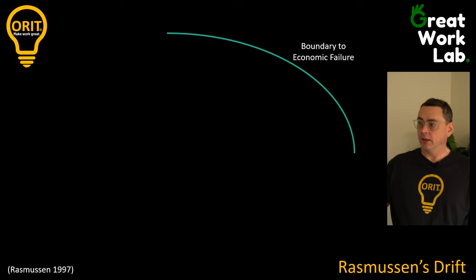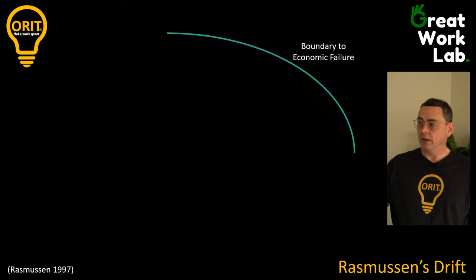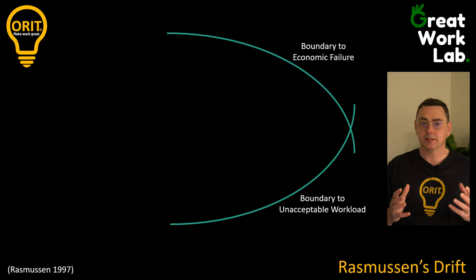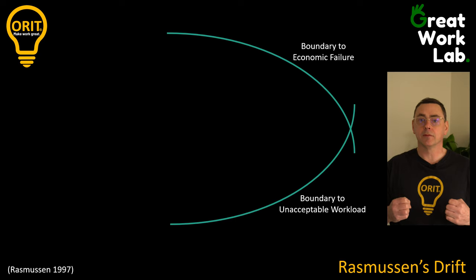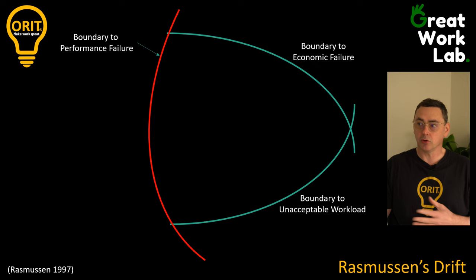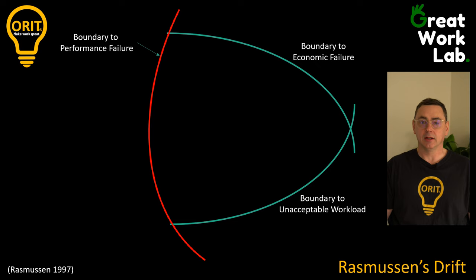Then we have the boundary to unacceptable workload — this relates to human capacity, how much work can we take on before we break down and fail. Then there is the boundary to performance failure, at which stage we cross that boundary where performance has failed and the system results in some type of accident or failure.